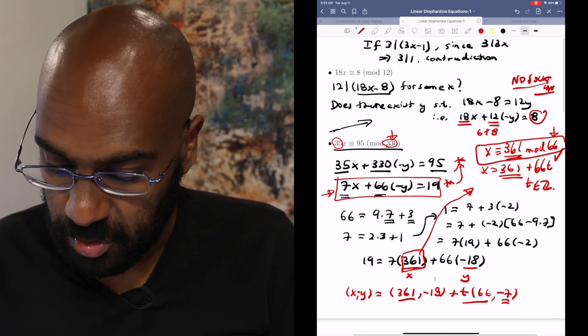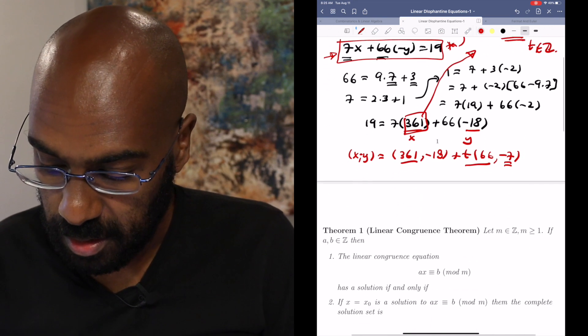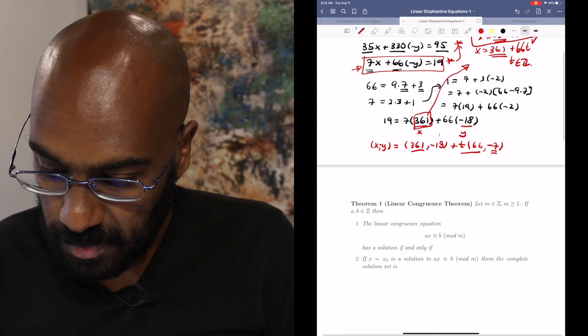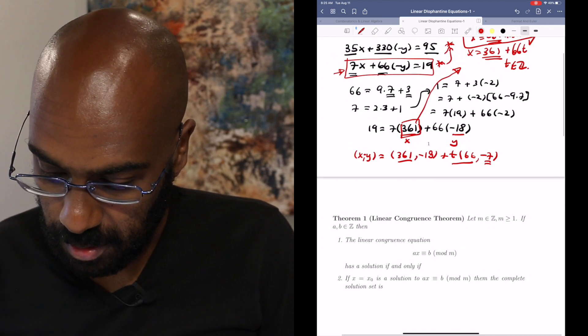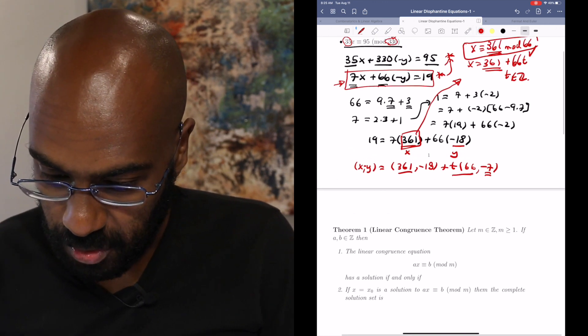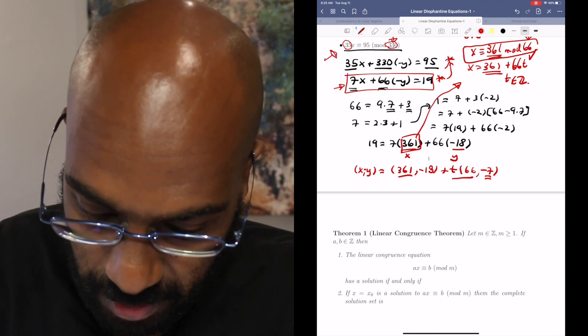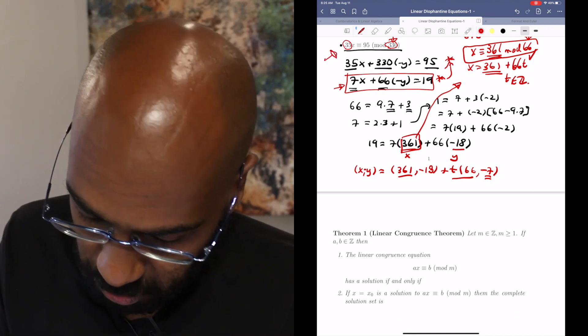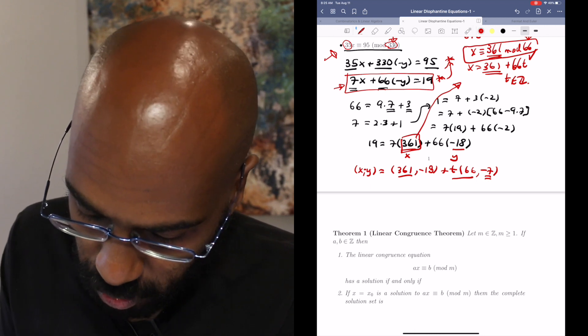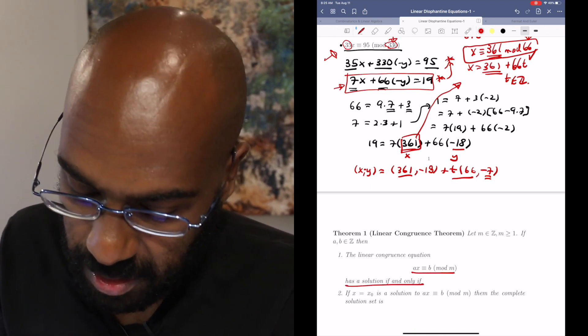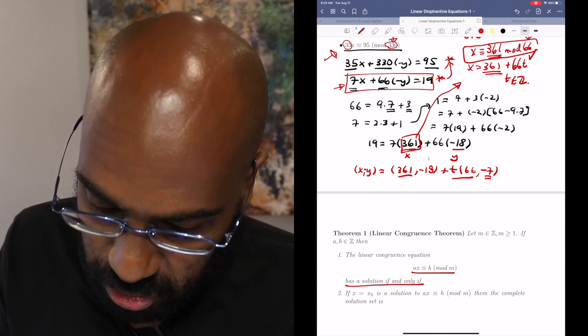This is cool. So we get a theorem from this called the linear congruence theorem that says if you have an integer m, and I'll use what we have here as motivation in this last example, if we have an integer m, at least one, the linear congruence equation, this has a solution if and only if some condition is satisfied. And the condition, let's think about this, this can be worded as, like what we did in the previous example,